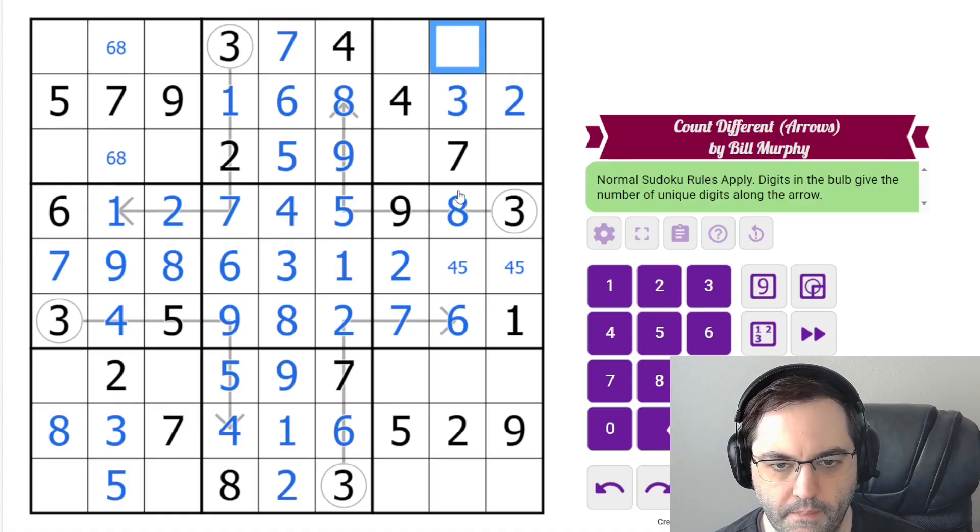Don't know about the six, eight yet. This column is not going to be quite as useful because we still have four or five here, but these need to include a nine and we've got a nine there. So that's the nine.